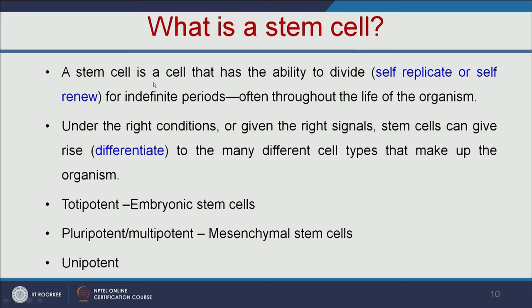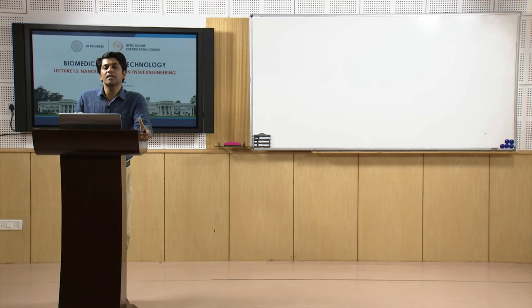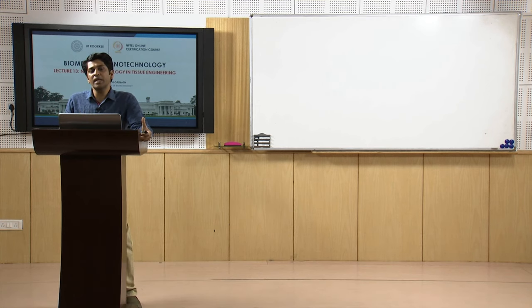What is a stem cell? It is a cell that has the ability to divide for indefinite periods, often throughout the life of the organism. In simple terms, you can assume it is like a seed — from the seed you get the plant, from the plant you get the flower, and again the fruit and seed. Similarly, stem cells can differentiate into any kind of cells.